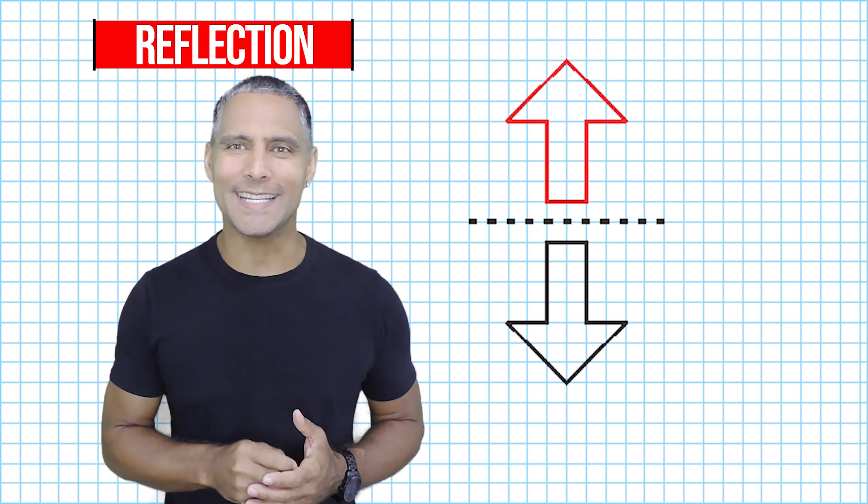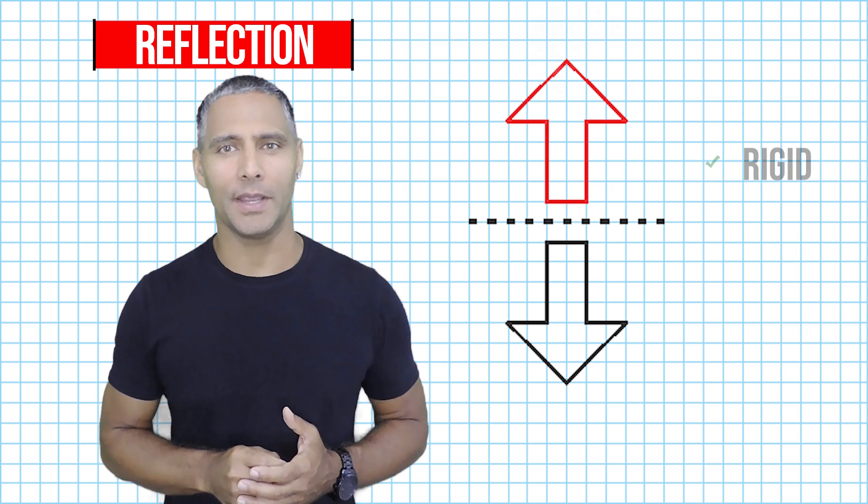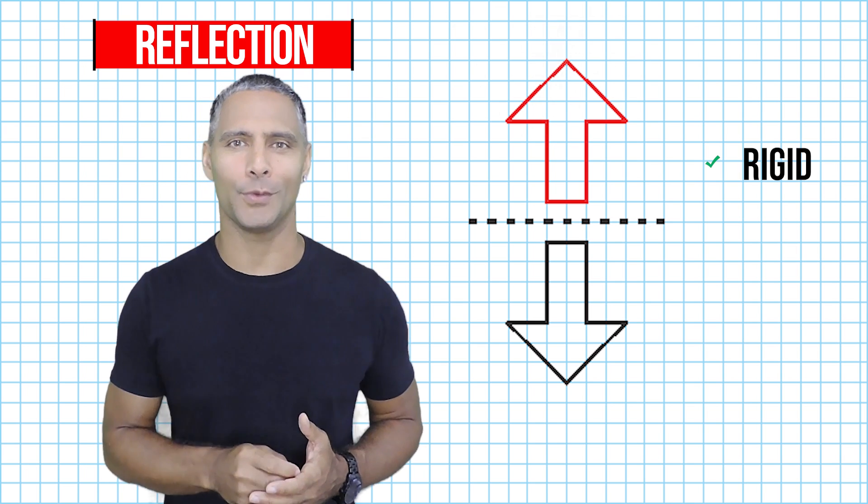A reflection is an example of a rigid transformation because the result is congruent to its original.